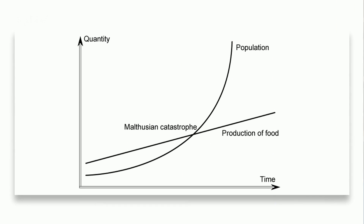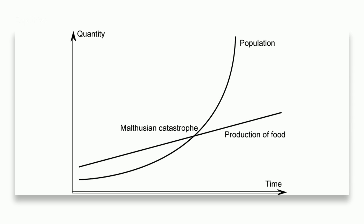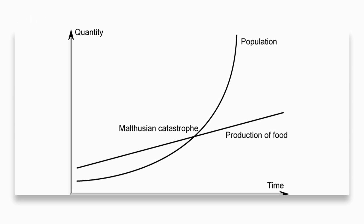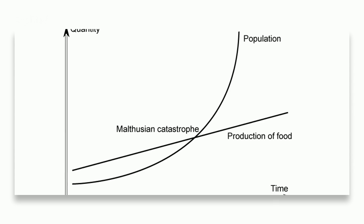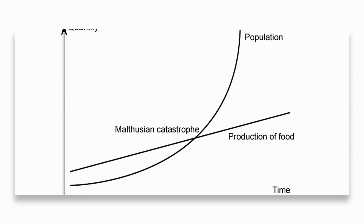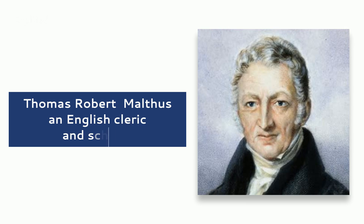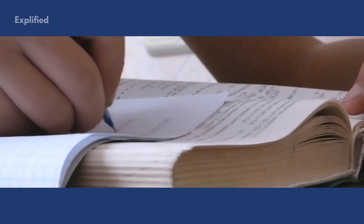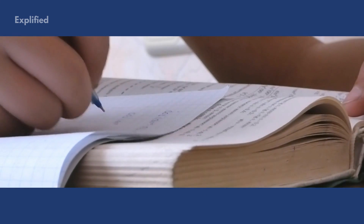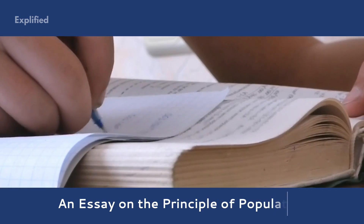The Malthusian theory of population is a theory of exponential population growth and arithmetic food supply growth. Thomas Robert Malthus, an English cleric and scholar, published this theory in his 1798 writings, An Essay on the Principle of Population.